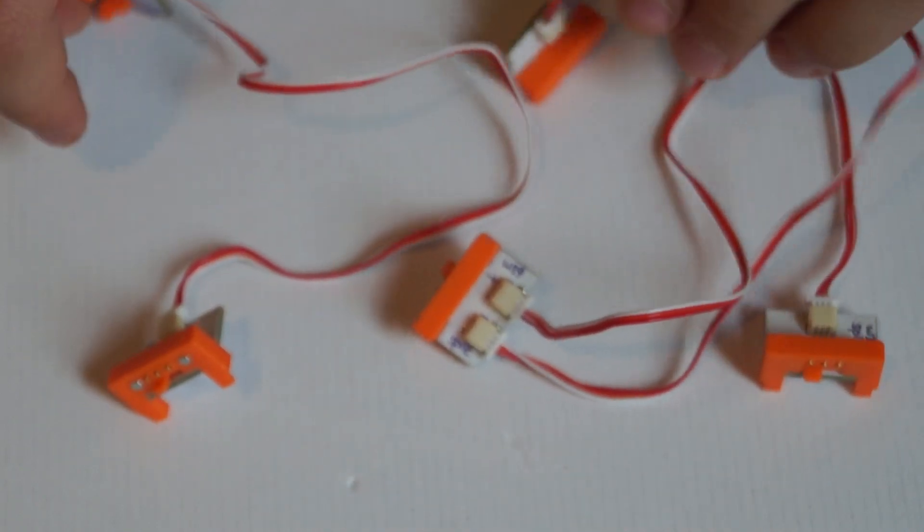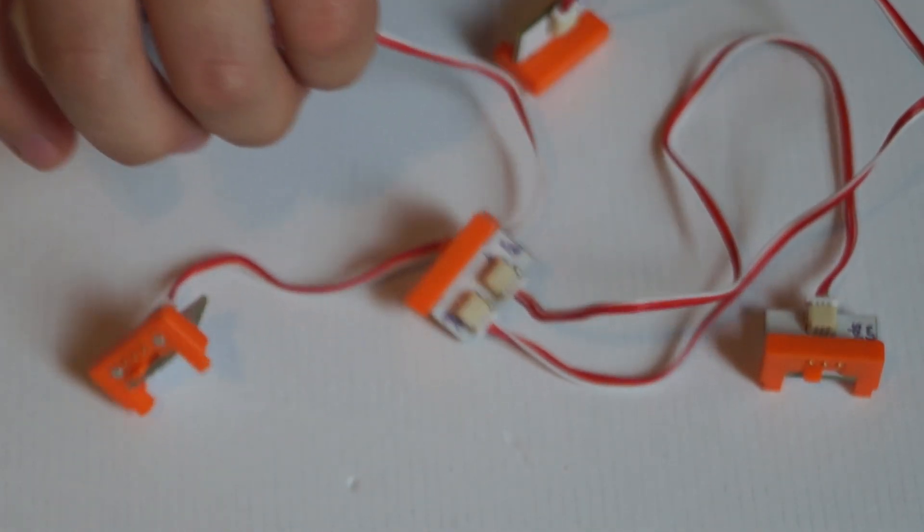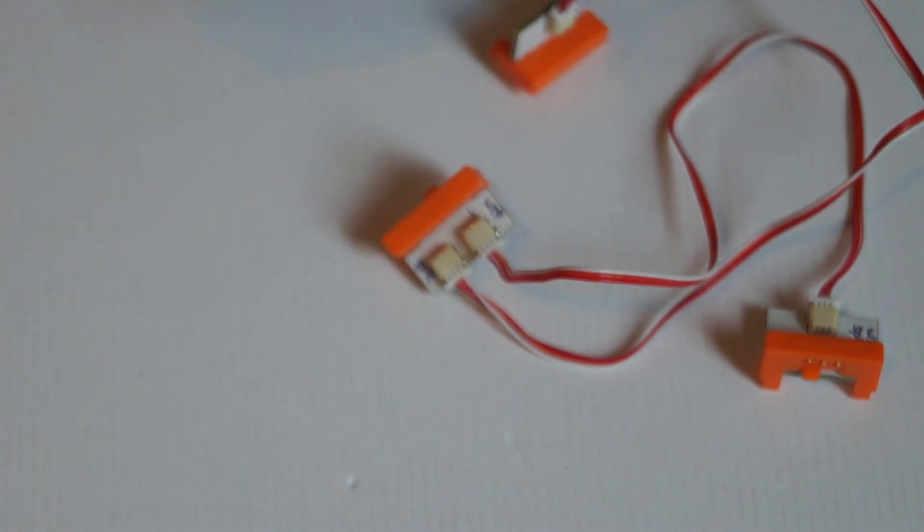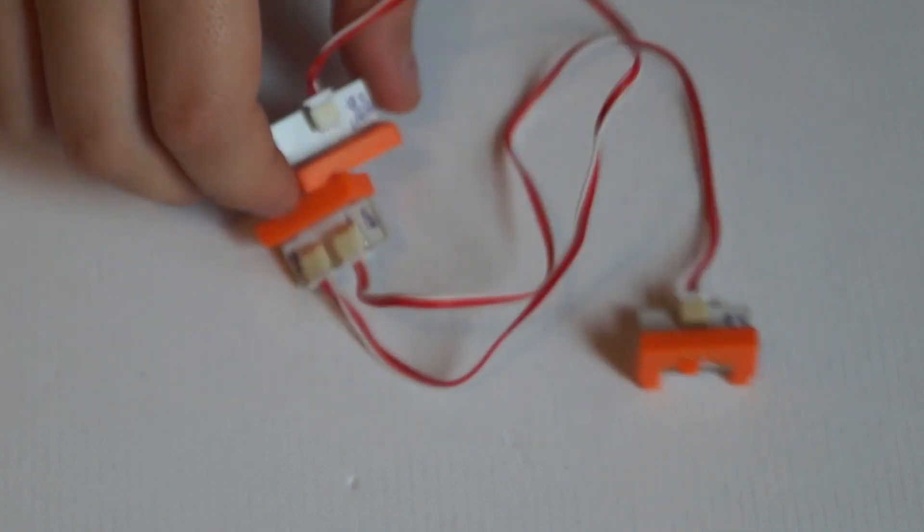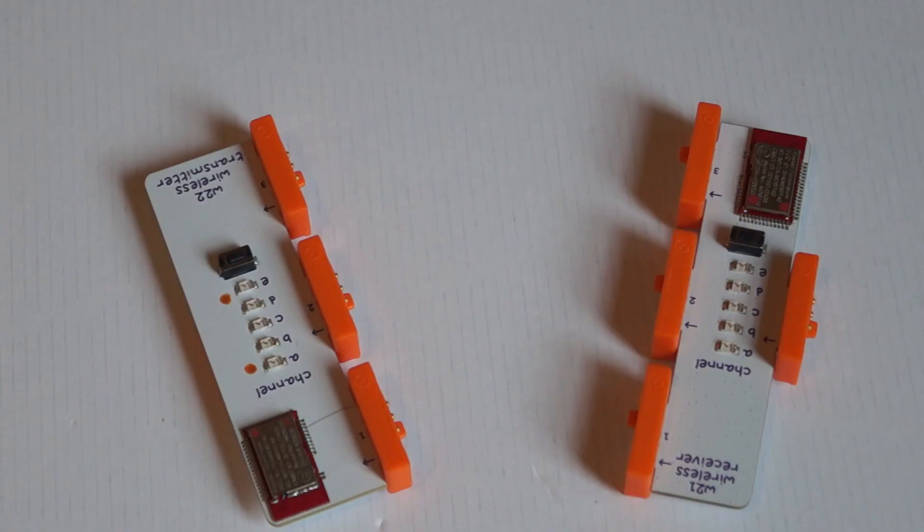So these are the wires. There's two types. There's normal wire, which you probably know what a wire does. It carries information through it. And then there's the splitter, which splits the information or just power.